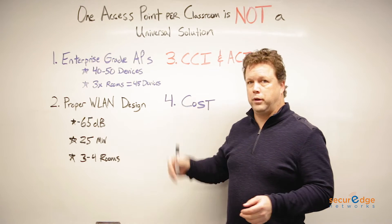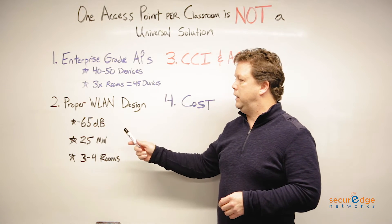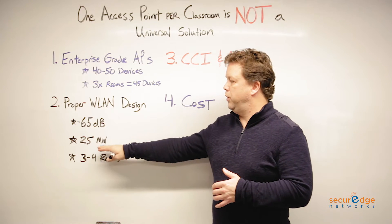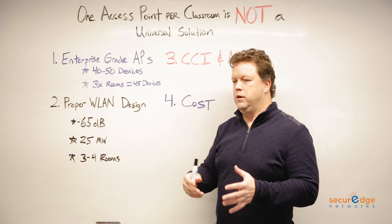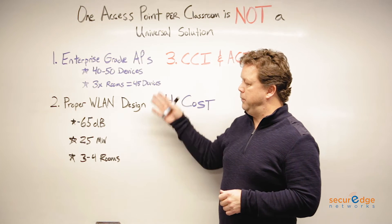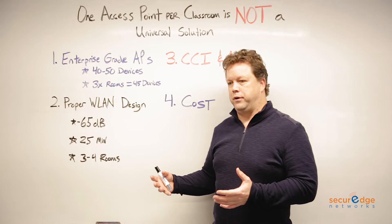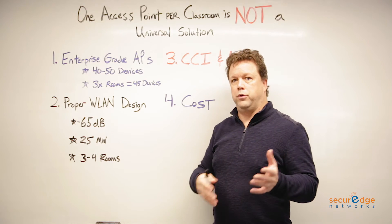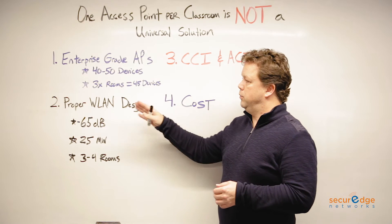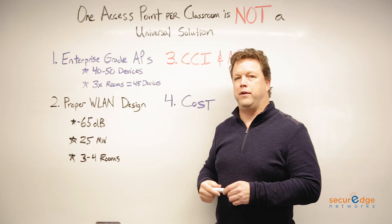Another reason why one access point per classroom is not a universal solution is doing a proper wireless LAN design. An enterprise-grade AP has no problem getting 65 dB to a client device in a classroom with the AP set at 25 milliwatt, which is a symmetrical power setting to an iPad, a Chromebook, or some sort of tablet-type device. That same AP can cover three to four classrooms with good signal, depending on the construction materials — in most K-12 environments, that's drywall with stud construction or potentially cinder block. So having the proper wireless LAN design implemented further validates why you don't have to have one AP per classroom.